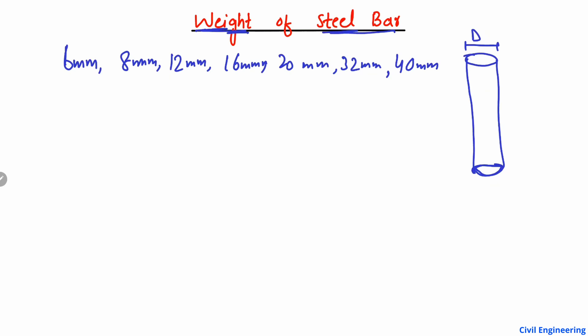We have different diameters of bar used in different construction. For example, very low diameter bars are used for some outside areas — for a lower garden you can use such small reinforcement bars. For slabs, you mostly use 8 millimeter or 12 millimeter bar. 16 millimeter and 20 millimeter bars are also used in small-scale beams, while bigger diameter bars are used in footings or pile cages. Depending on the purpose, we have different diameters of bar.